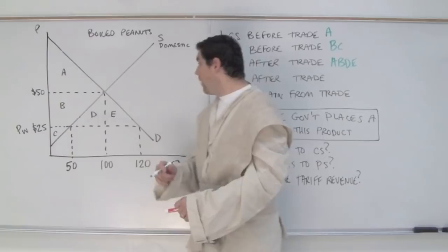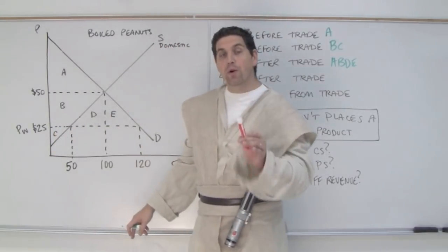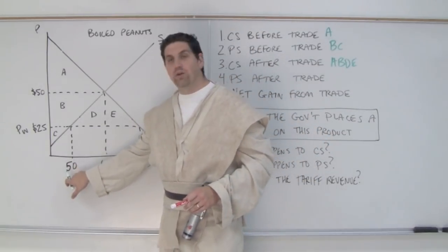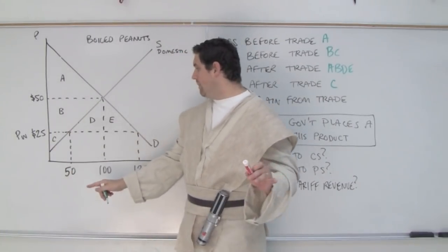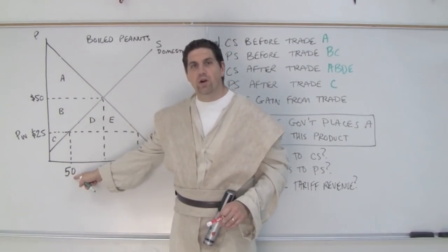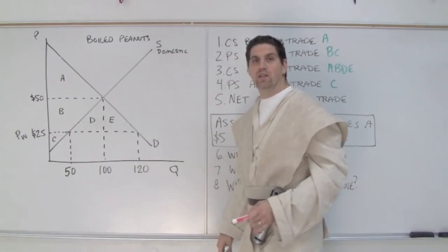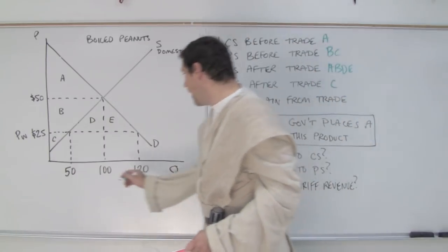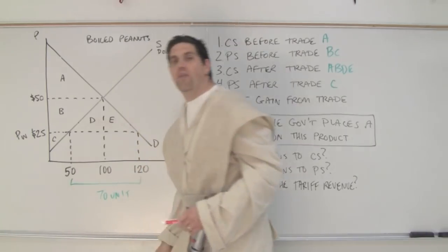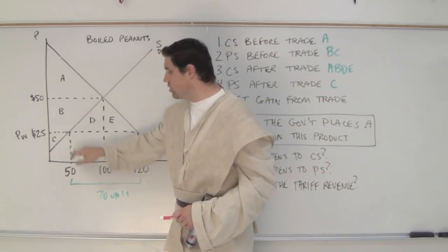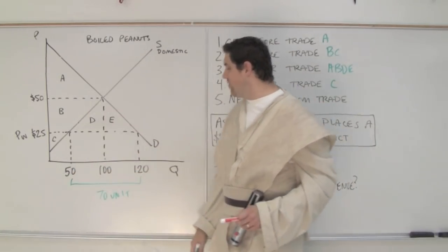What about producer surplus? They didn't sell it for $50 — they only sold it for $25. If we produce in our own country, we can only produce 50 units, so producer surplus has to be letter C. But if we're only producing 50 units in our own country, then how are people buying 120 units? We are importing some. We are importing exactly 70 units from other countries. At this low price PW, producers domestically will produce 50 units, but consumers want 120 units, so we're going to import those 70 units from other countries.